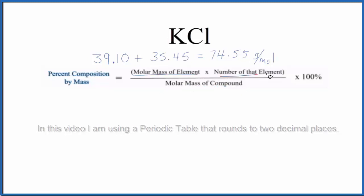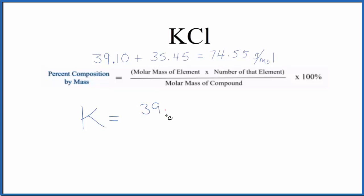We need to find the molar mass of the element and then the number of each element. So let's do potassium first. For potassium on the periodic table, it's 39.10 grams per mole. The number of potassium atoms, there's just one.